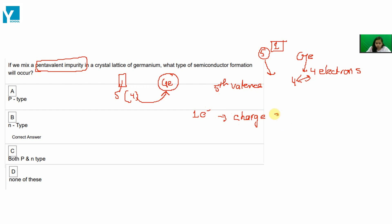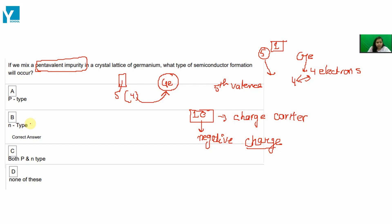That electron will work as a charge carrier. Because it is an electron that is free to move, it develops a negative charge. So if we use a pentavalent impurity and introduce it into a crystal lattice of germanium, an N-type semiconductor will be formed.